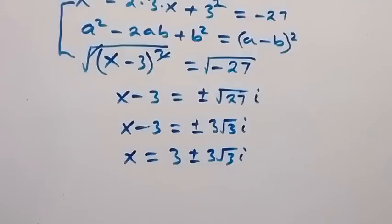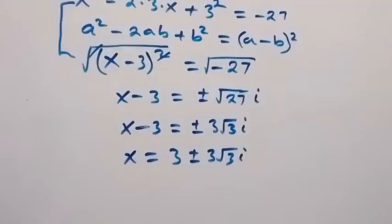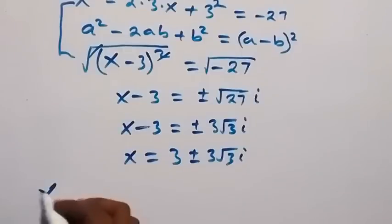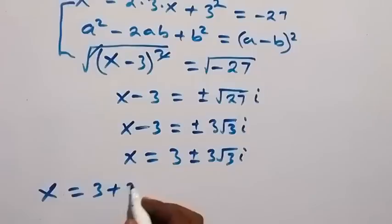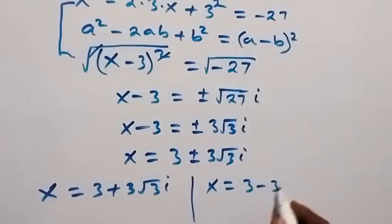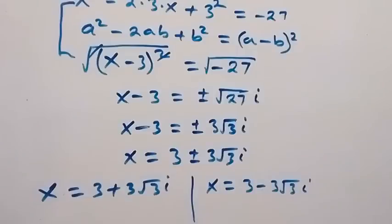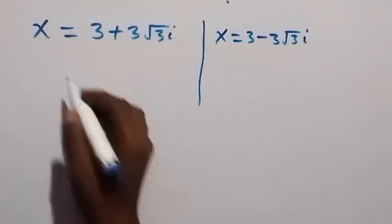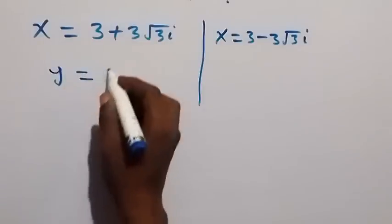So we have two possible values of x. From here, we have x1 equals to 3 plus 3 root 3 i, and x2 equals to 3 minus 3 root 3 i. Then we can get the corresponding values of y from each of these, from y equals to 6 minus x.